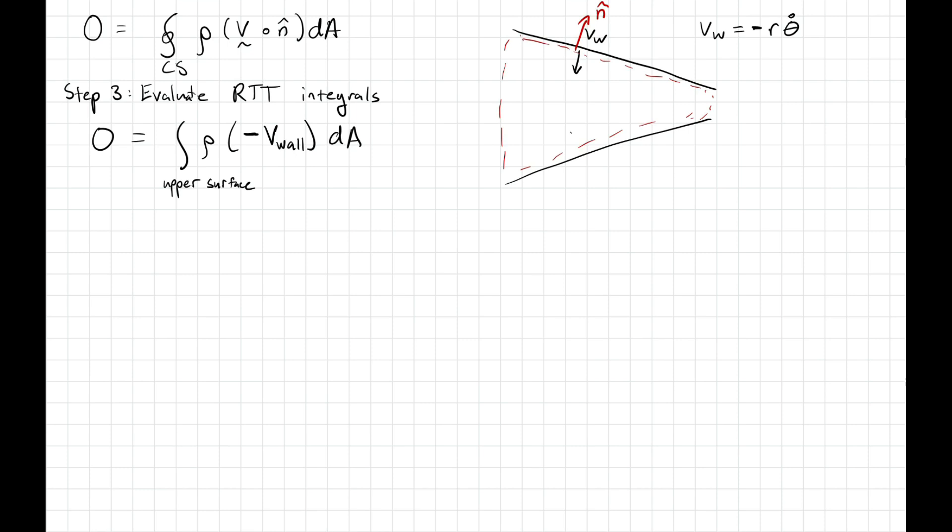There's an equivalent integral to be performed from the bottom surface. So that's the integral of rho times V dot N, which in this case, again, V dot N is minus V wall, because V wall and the outward facing unit normal are in opposite directions. And then integrated over dA.